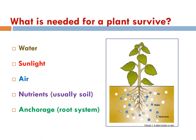What is needed for a plant to survive in a natural environment? One of the basic needs is water, sunlight for photosynthesis, air for photosynthesis and respiration, and nutrients. Nutrients are of two types: macronutrients and micronutrients. Plants also need an anchorage system and root system.